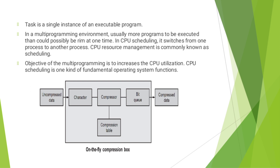A task is a single instance of an executable program. Here we give one diagram: the on-the-fly compression box. In a multi-programming environment, usually more programs should be executed than could possibly be run at one time. In CPU scheduling, it switches from one process to another process.